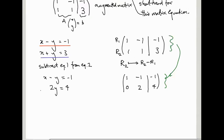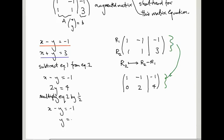The second equation now looks good: 2y equals 4, which tells us y equals 2. We multiply equation 2 by a half. Equation 1 stays the same; equation 2 becomes y equals 2. In terms of the augmented matrix, the top row stays the same and the second row becomes (0, 1 | 2). We multiplied row 2 by a half — row 2 is replaced by one-half times row 2.